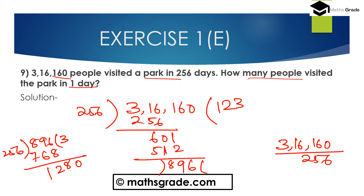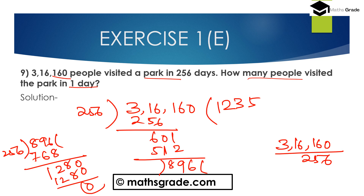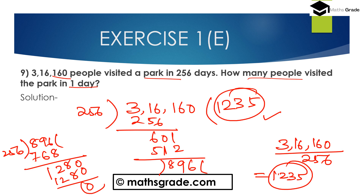Continuing the division: remainder gives 1,2,8,0. Then 5 times the divisor: 5 times 6 is 30, 5 times 5 is 25 plus 3 is 28, then 10 plus 2 is 8 — remainder is 0. So the quotient digits are 1, 2, 3, 5. Therefore 3,16,160 divided by 256 equals 1,235. So 1,235 people visited the park in one day.